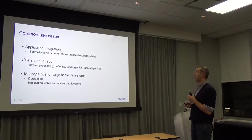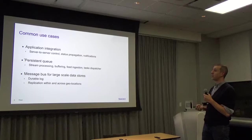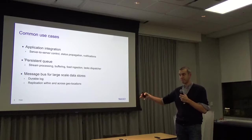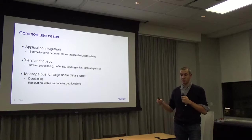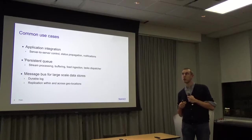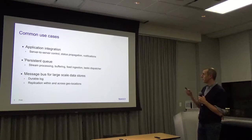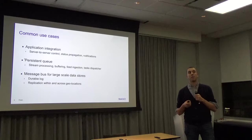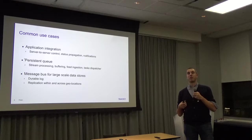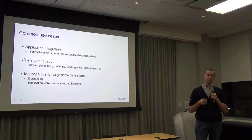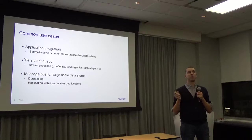We also have a lot of feed ingestion and buffering — events come in and your consumer might have failures, so you don't want to lose messages. You can use topics as a buffer for tracing data. And in another bucket of use cases, users use our topics as a task dispatcher: consumers publish new tasks, other consumers pick up those tasks, and we have ways to balance the distribution of messages across all consumers.